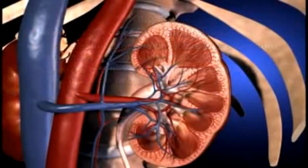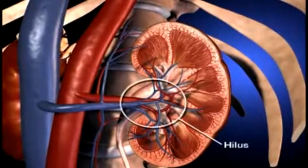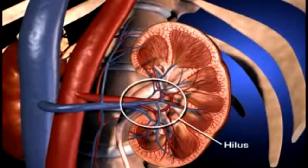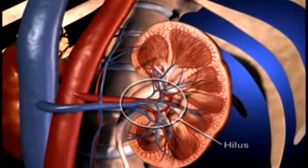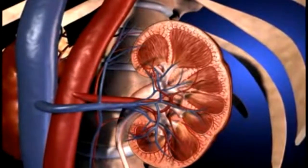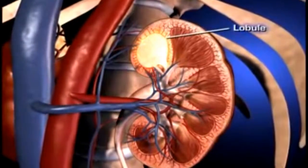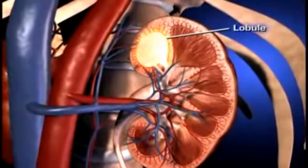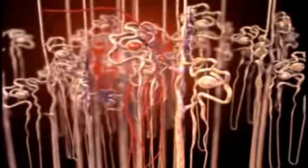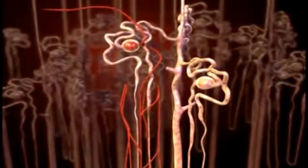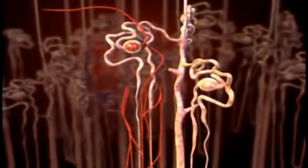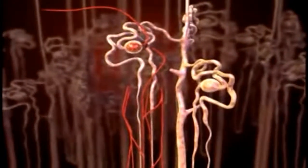The medial border of the kidney is indented by a deep fissure called the hilus, where the blood vessels, nerves, and ureters connect to the kidney. The kidney is composed of up to 18 lobes. Each lobe is composed of nephrons. Nephrons are the functional units of the kidney, and each kidney contains more than one million nephrons.